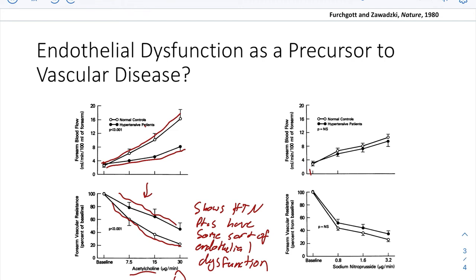But we look over here at sodium nitroprusside, which is an endothelial independent vasodilator. And we see there's not a big change in either flow or resistance with hypertensive and normal patients. There's not a big difference between them.